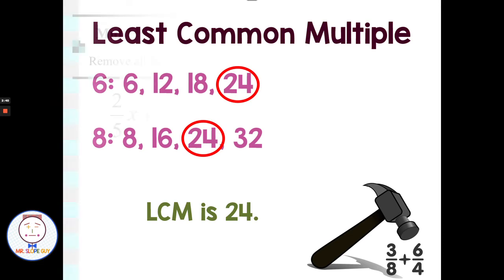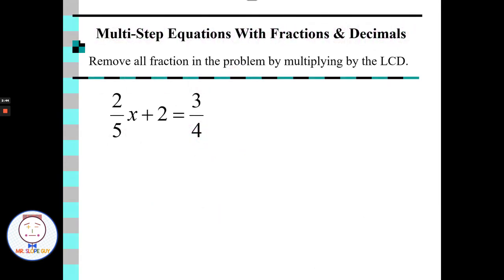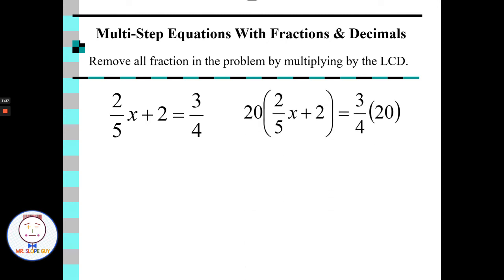Let's move on to some examples. We have two fifths x plus two equals three fourths — two different fractions. The two denominators are five and four. Counting by fives: five, ten, fifteen, twenty. Counting by fours: four, eight, twelve, sixteen, twenty. The least common multiple is twenty. So by multiplying both sides by twenty, I can get rid of all of these fractions in one step.